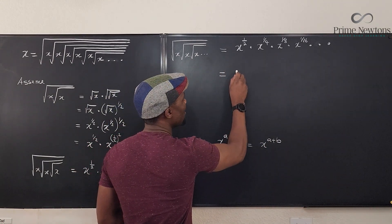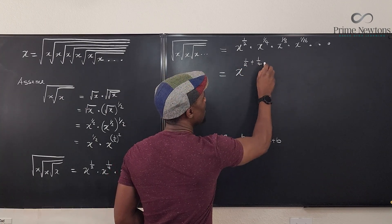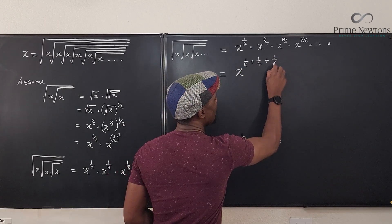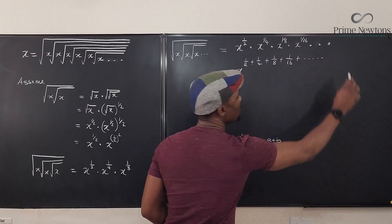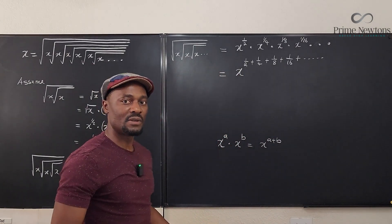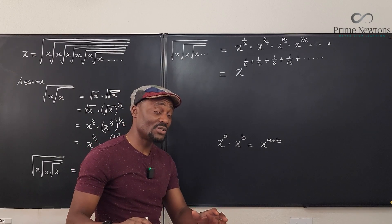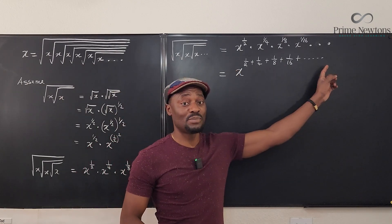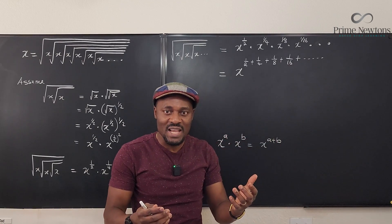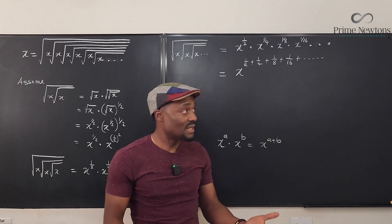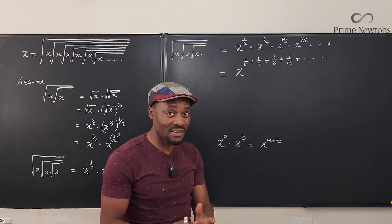So this is going to be equal to x raised to power one half plus one over four plus one over eight plus one over sixteen, and you keep going like that forever. Now, what have you seen? The observation is that the exponent is actually a series because there is a regular change and you're adding them up.